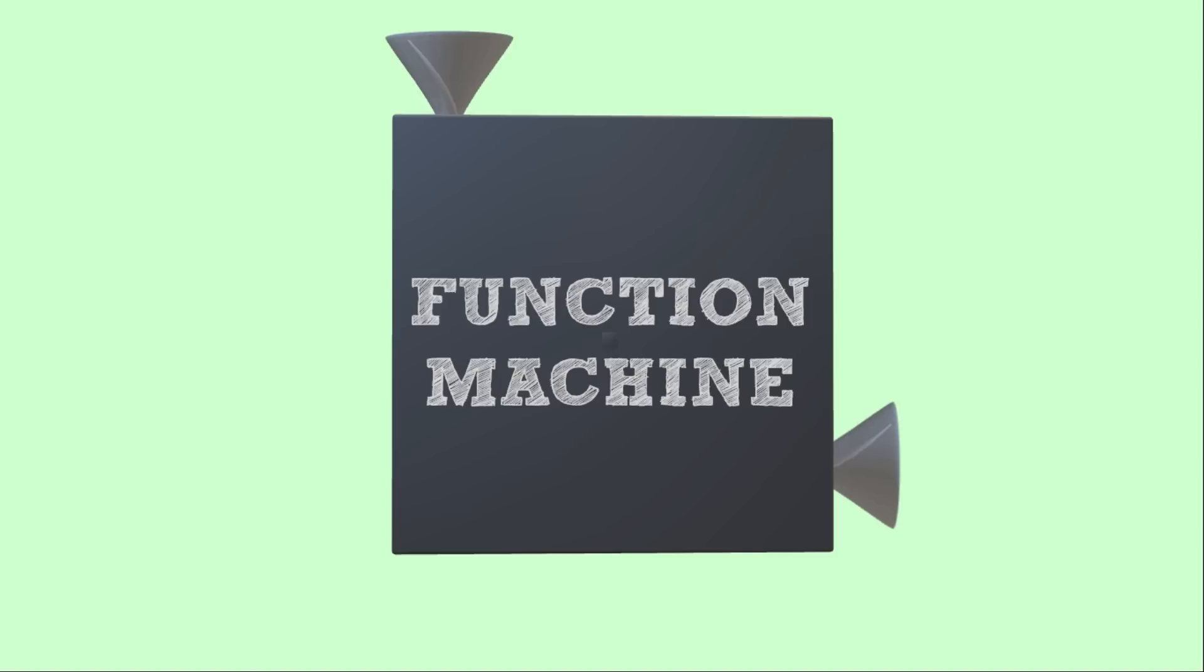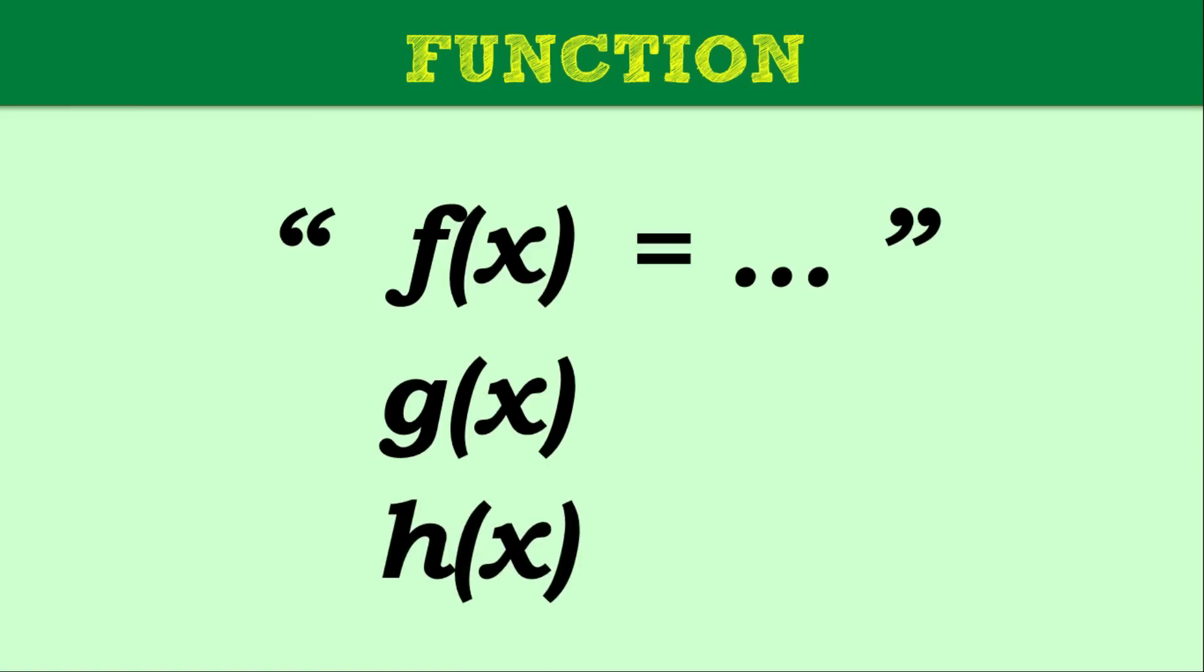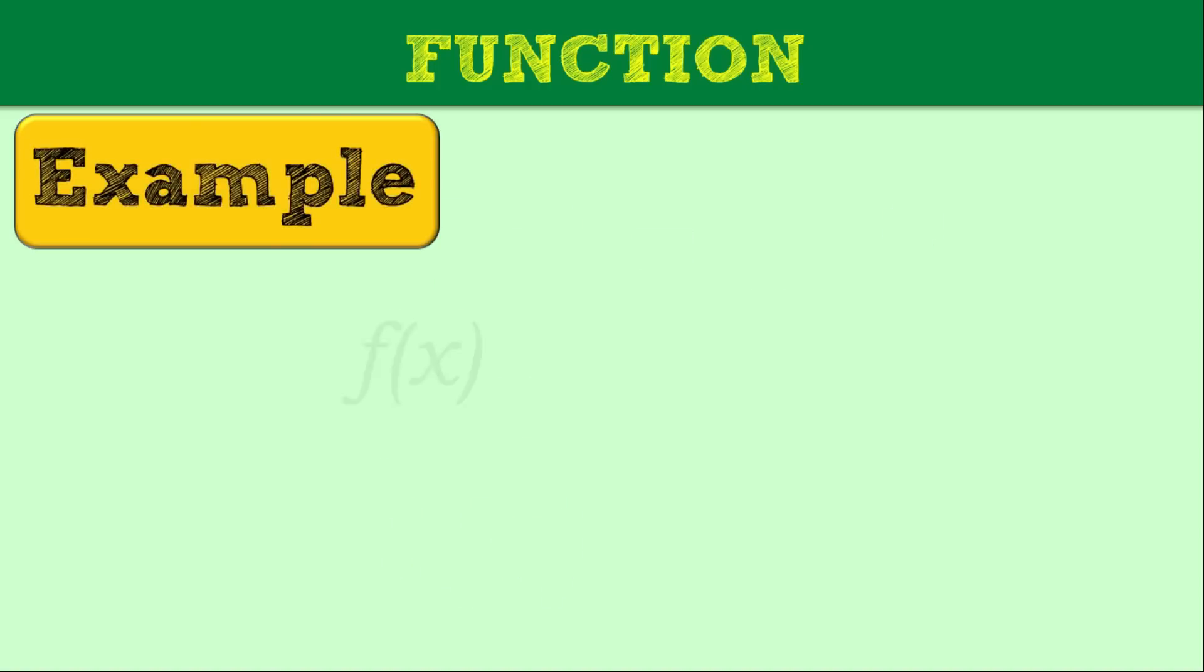How do we write and read functions? You can write it using this function notation. This is f of x is equal to the given. Another way of writing that is we can also use g of x, h of x, and other letters. Traditionally, functions are referred to by single letter names. However, you can also use any letter or letters to name a function.